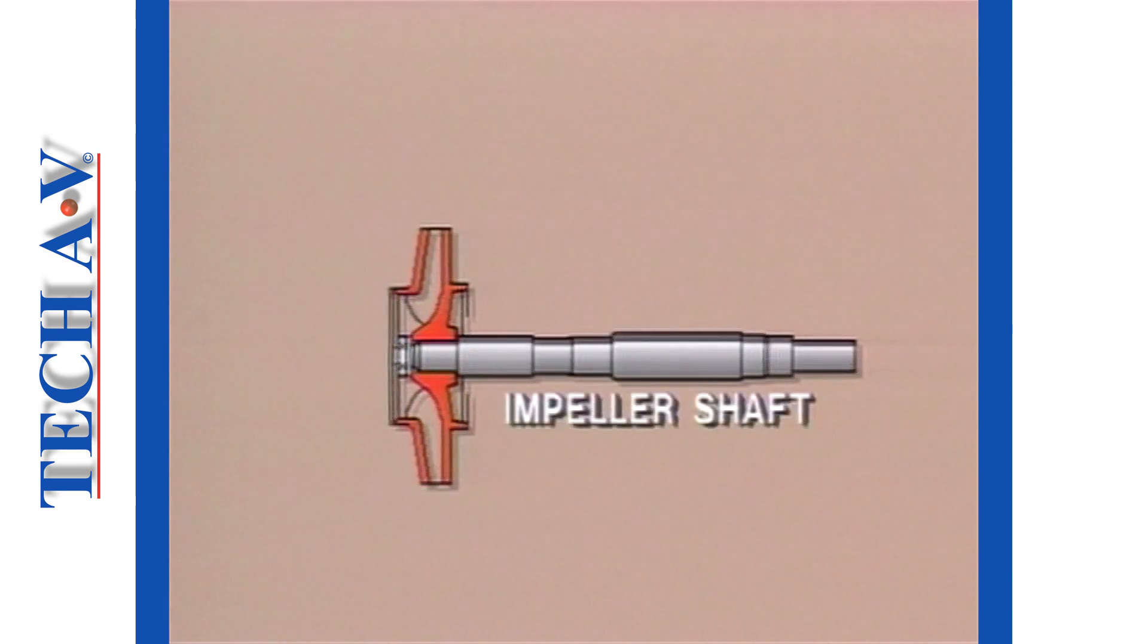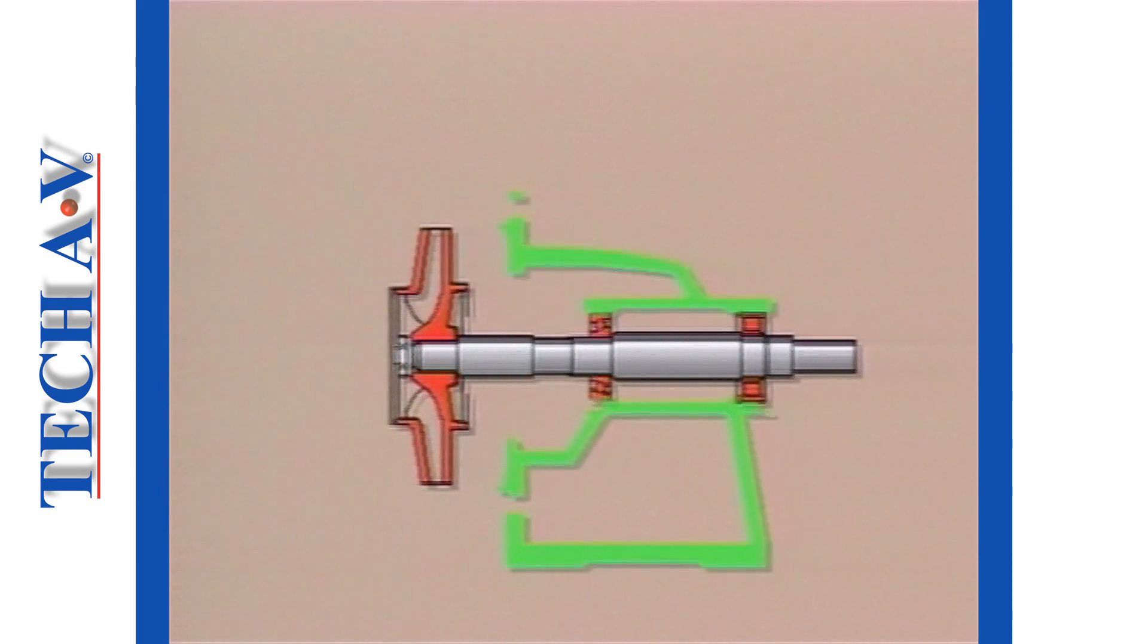The heart of the pump is the impeller, which is fixed to the end of the impeller shaft. The impeller shaft is supported in this unit by ball bearings, although roller and plane bearings can also be used. The bearings and shaft are housed in a bearing bracket.